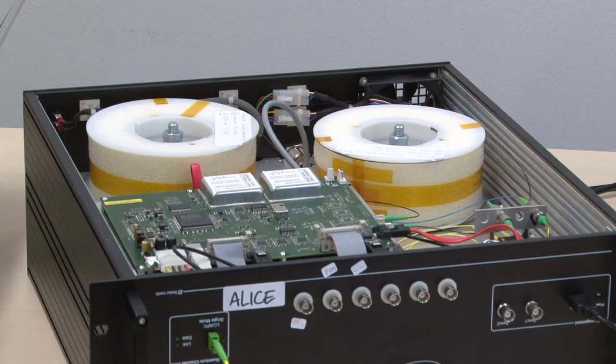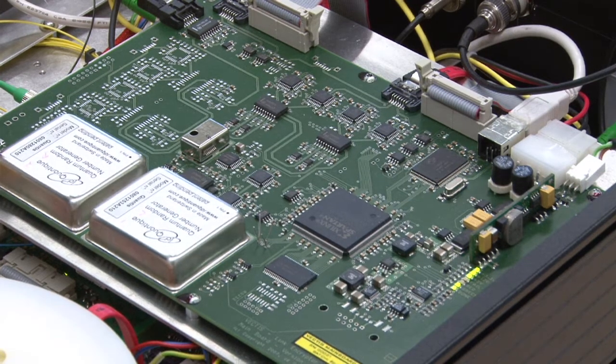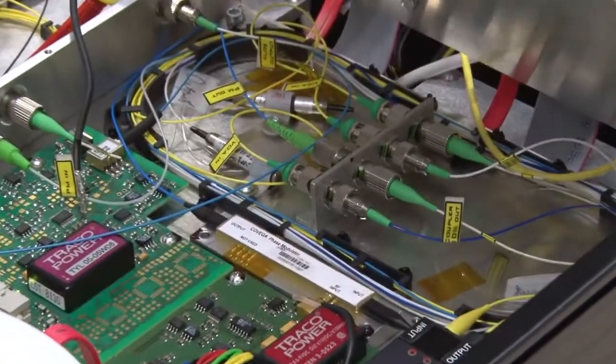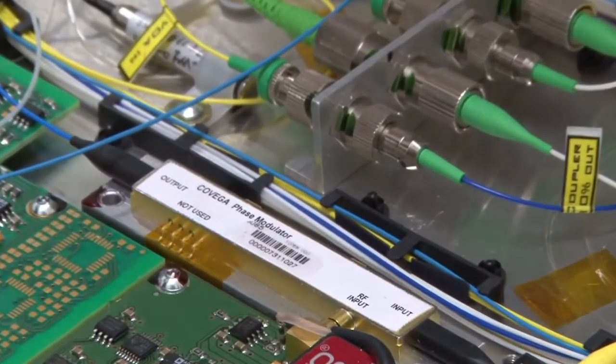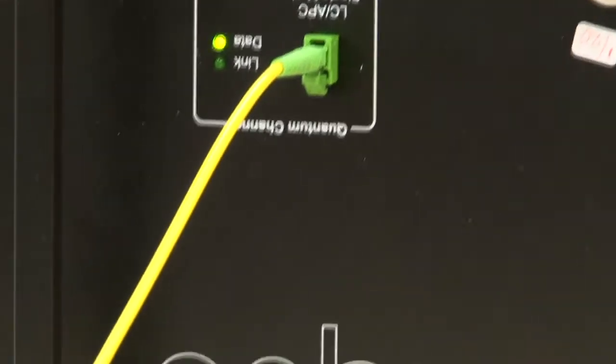The bit sequence in QKD needs to be random. So here you see two quantum random number generator modules that perform this task. Next to various optical and electronic components, you see the phase modulator that encodes the bit information on optical signals. These optical signals are sent by Alice.